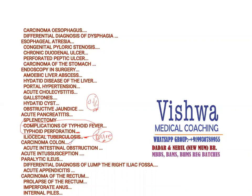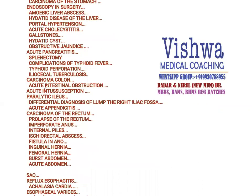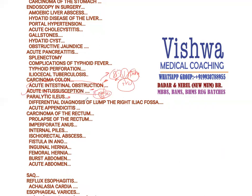Carcinoma of the colon is fairly common in developed countries because of lack of fiber in food. There is right-sided growth and left-sided growth — remember that. Acute intestinal obstruction is a very common case that can be kept in vivas or asked as a long-answer question. Patient presents with distension of the abdomen, vomiting, and dehydration in a shock-like state. Causes include acute intussusception — also called telescoping of the intestines — and paralytic ileus, which is paralysis of the intestine.